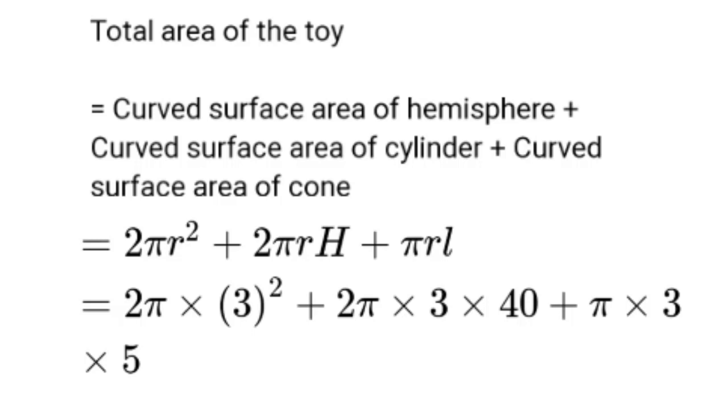Now we will put the values of the radius and the height as well as the slant height. So we have 2π × 3² + 2π × 3 × 40 + π × 3 × 5.